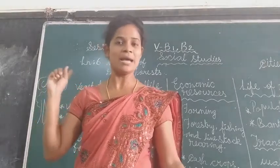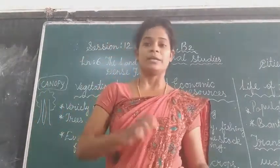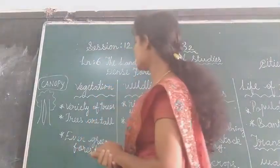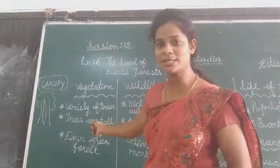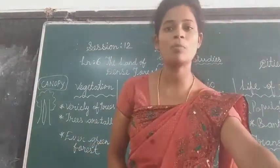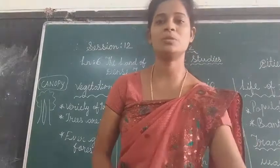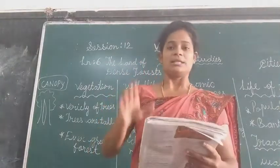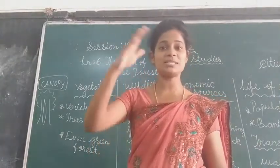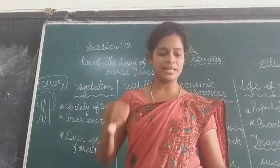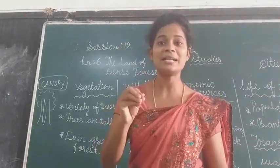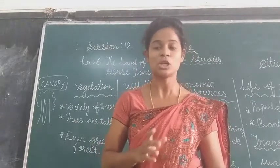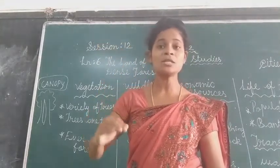Shall we get into the lesson? I have listed out on the board the very important points in each topic. First, we will know about vegetation. When we say vegetation, it means the plantation — trees and plants. The region is very hot, so trees and plants grow very quickly, because sunlight is important for plants to grow. There is enough sunlight, so plants grow quickly and they also grow taller.